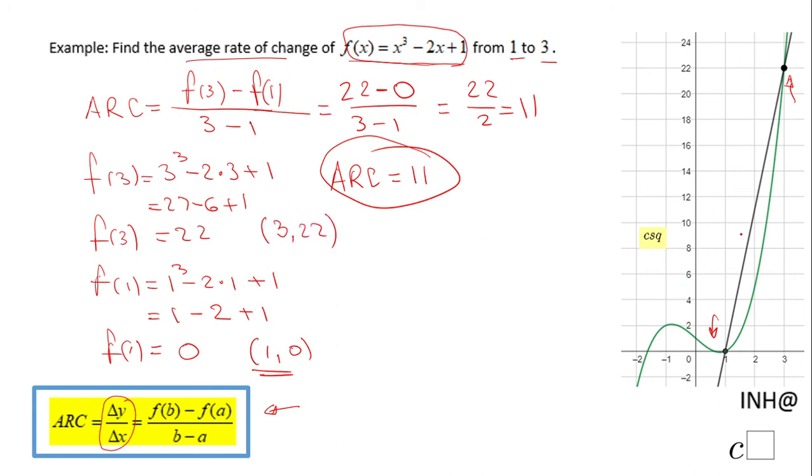And you notice we have this line that connects these two points. The slope of this line is going to be 11.